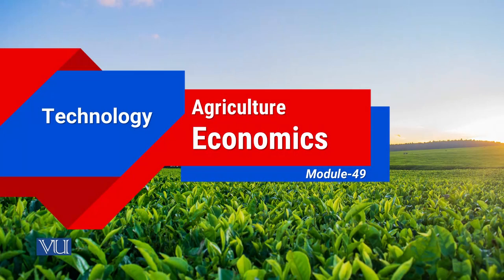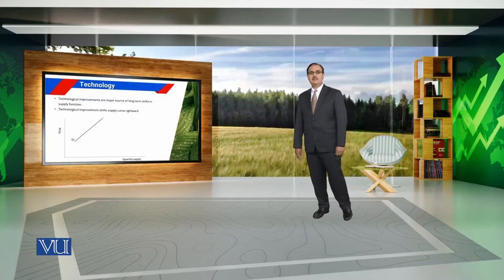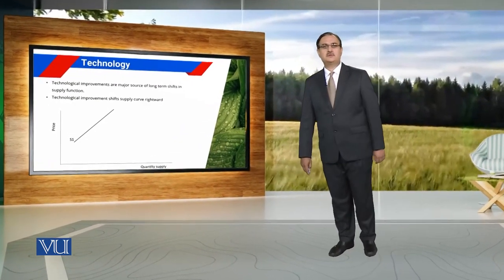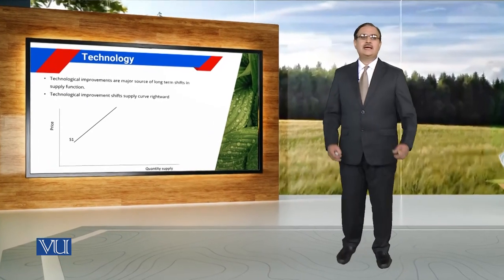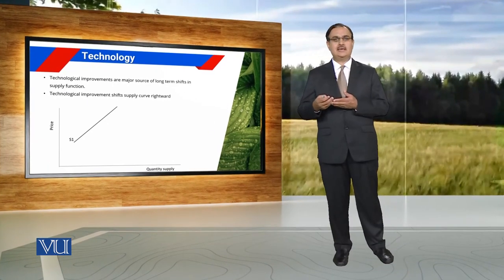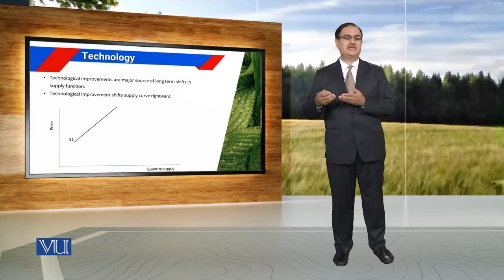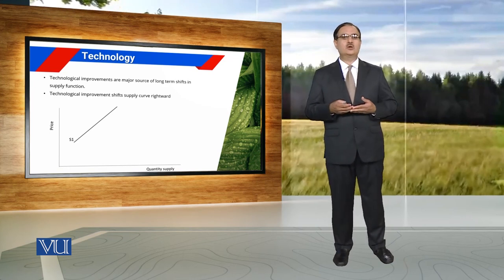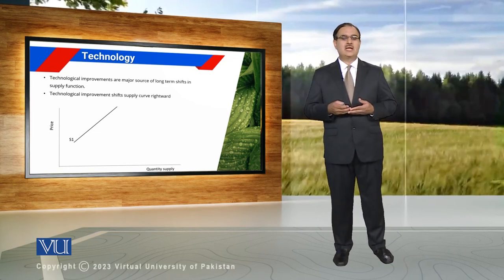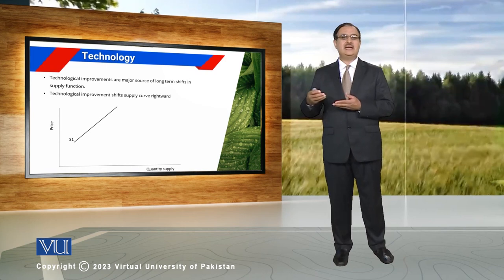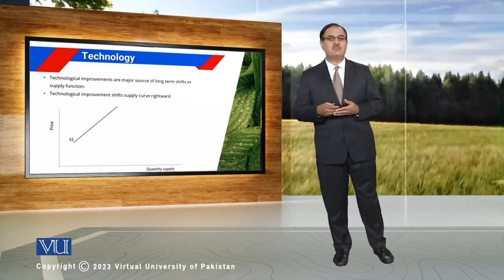Module 49: Technology. Because of technological improvement, there is a change in supply of the commodity under consideration. Technology usually indicates a change in the production process in the long term, and because of that change in the production process, there is a shift in the supply function.